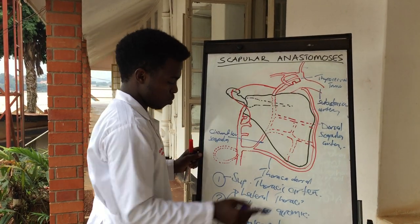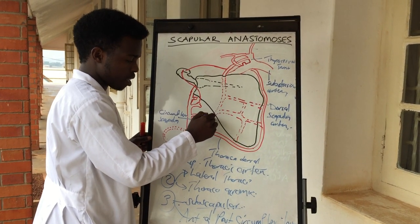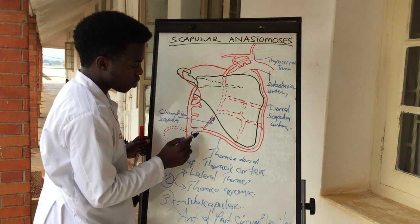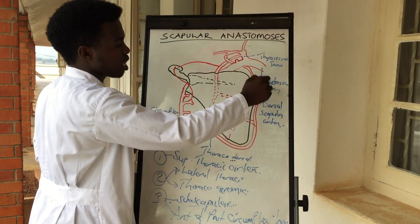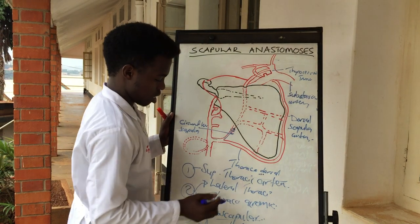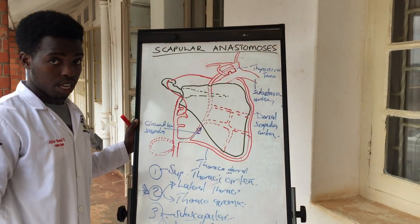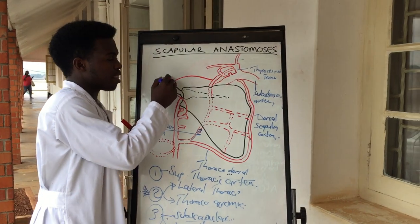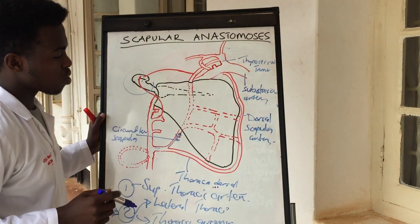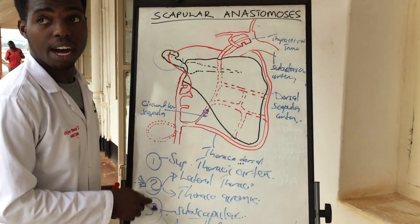From the scapular anastomosis, the subscapular artery gives us the circumflex scapular, which anastomoses with the suprascapular artery. The thoracodorsal artery together with the dorsal scapular make an anastomosis on the body of the scapula. The second division of the axillary artery gives off the thoracoacromial, which divides into four branches; the acromial branch runs to supply the acromion process together with a branch from the suprascapular artery. These are the main divisions of the anastomosis of the scapula together with the divisions of the axillary artery.